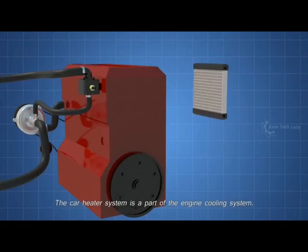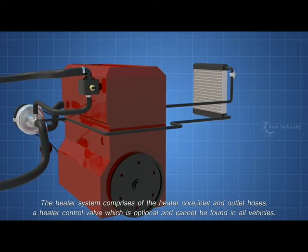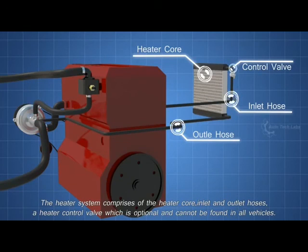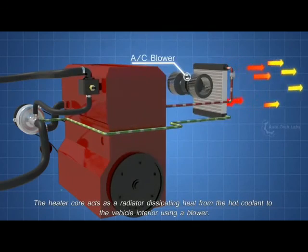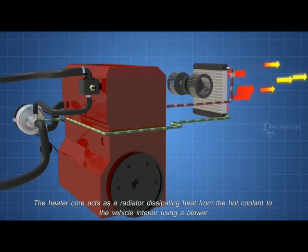The car heater system is a part of the engine cooling system. The heater system comprises of the heater core, inlet and outlet hoses, a heater control valve which is optional and cannot be found in all vehicles. The heater core acts as a radiator, dissipating heat from the hot coolant to the vehicle interior using a blender.